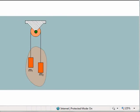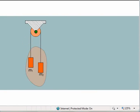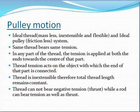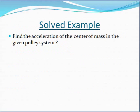In this pulley system we have two objects M1 and M2 connected with the thread, so tension T will act on both objects. The thread is inextensible, so the total thread length remains constant. Also, the thread cannot bear negative tension — that is, thrust — while a rod can bear both tension and thrust.